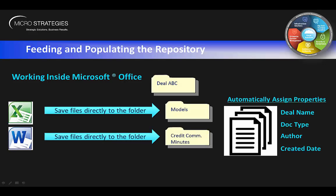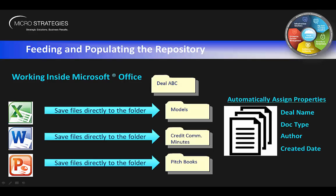The same concept applies on the Word side — users can save their documents to the credit committee minutes folder, and when saving from within Word it'll automatically assign that doc type as credit committee minutes. Traveling down to PowerPoint, same exact premise: building pitch books and saving into the repository from the PowerPoint menu, save to Alfresco, choose the pitch book folder, and it'll automatically assign the deal name as DealABC and the doc type as pitch books. Now users can search for pitch books for this particular deal, keeping the whole process seamless.